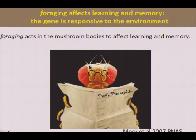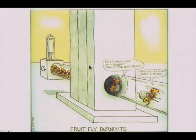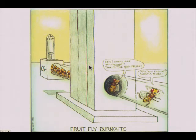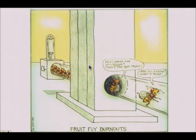Let me talk about learning and memory. The foraging gene acts in mushroom bodies to affect learning and memory, and we know it's responsive to the environment. We use an olfactory avoidance assay — an associative learning and memory task. Flies are brought down a small elevator with odors, say peach and banana, on each side. When flies go to one side, they receive a shock or shaking — aversive training — repeated until they learn to avoid that odor. Then 15 minutes later, you test recall with both odors and no shock. You can also test at 24 hours for long-term memory, which is protein synthesis-dependent.